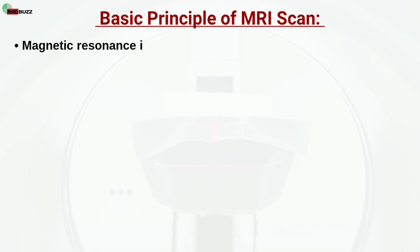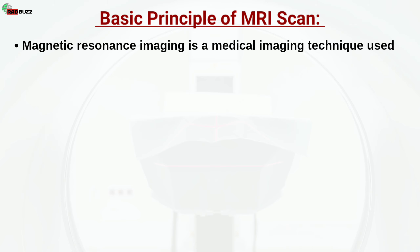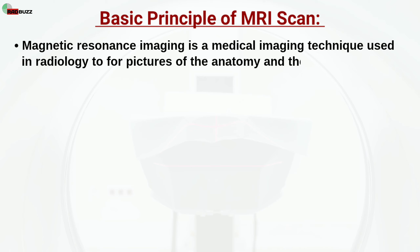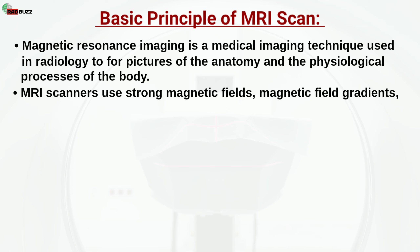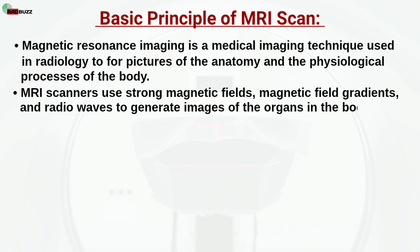Magnetic resonance imaging is a medical imaging technique used in radiology to form pictures of the anatomy and the physiological processes of the body. MRI scanners use strong magnetic fields, magnetic field gradients, and radio waves to generate images of the organs in the body. Present MR imaging is based on proton imaging.